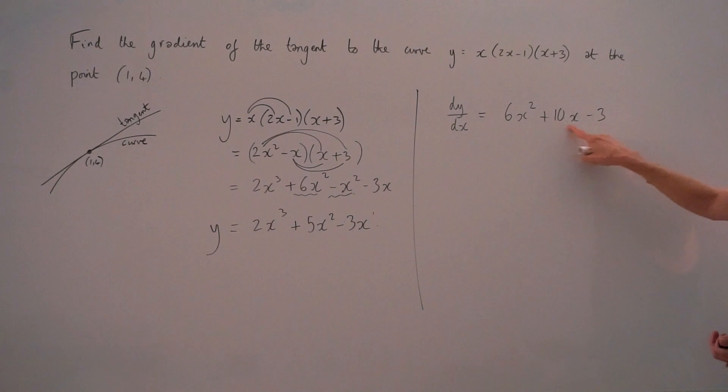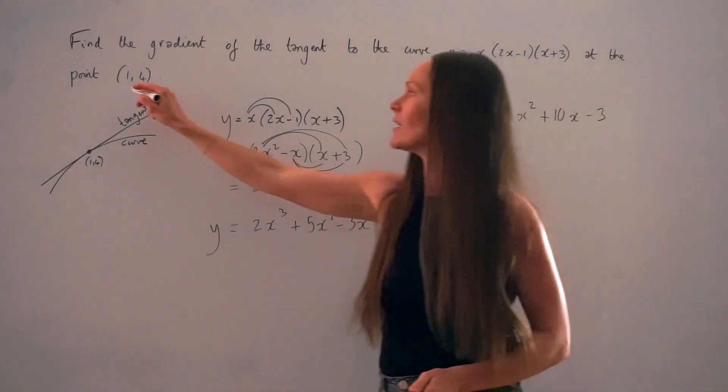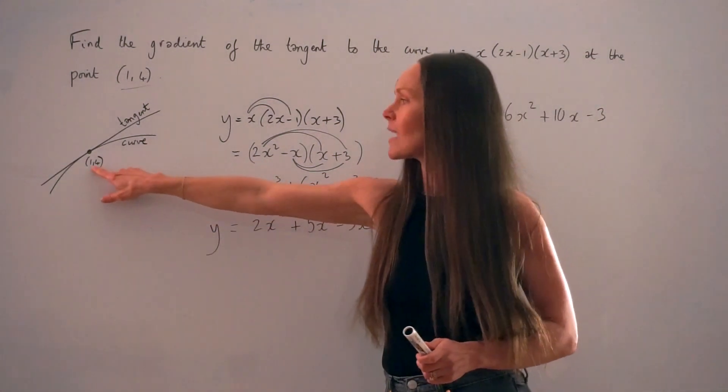So this is an expression for the gradient of the curve at any point along the curve. Except we've been given a specific point in this question over here. Remember, the point that they intersect is at (1,4).